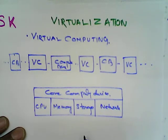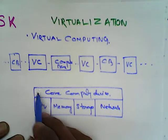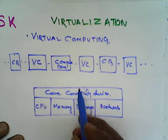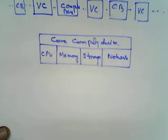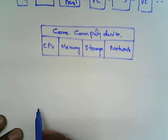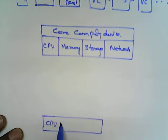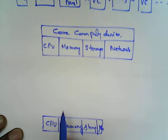That is a core computing device. So this is a core computing device. I can put it in a very simple structure: we all know that a CPU, memory, storage, and network — that is CPU, memory, storage, and network — make up the core computing device.